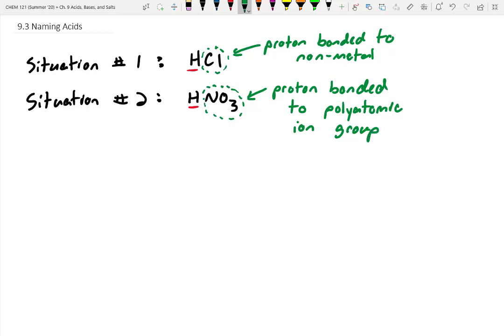It's not a polyatomic right now, but once it loses that proton, it then becomes a polyatomic ion. Versus up above, chlorine, when it falls off, becomes chloride. That's not a polyatomic ion. That's just a singular atom. So that's the main difference between these two groups. Let's go through and break these down, and we'll talk about how to name situation one first.